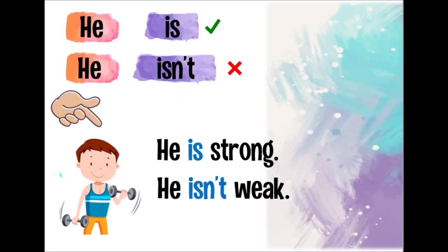If we are talking about a boy, about your daddy, your brother, a friend, we say he. He is or he isn't. For example, he is strong. He is strong. He isn't weak. He isn't weak.